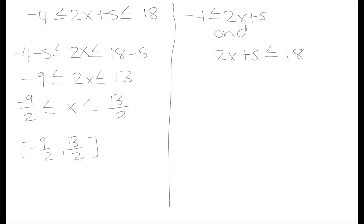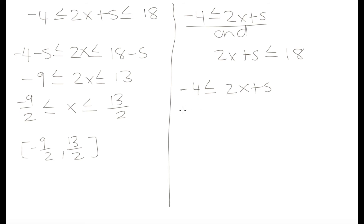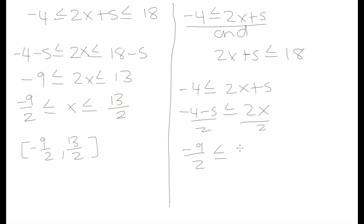Our two boundaries are negative 9 over 2 and 13 over 2, and we have square brackets because these two numbers are included as possible values for x. Now let's do it by solving each inequality separately. For the first part: negative 4 is less than or equal to 2x plus 5. Moving plus 5 to the left gives us minus 4 minus 5, leaving 2x. Dividing both sides by 2: minus 9 over 2, which is less than or equal to x.